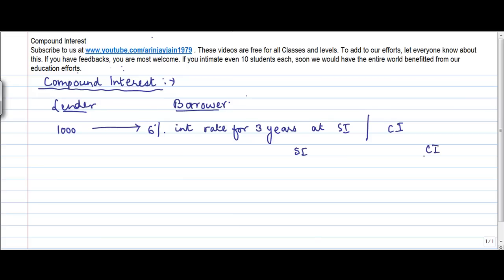Now what happens in a simple interest is that let's say you have 1000 of principle. This amount is called the principle and is normally denoted by P.